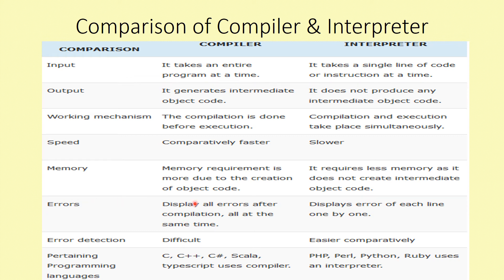Error detection: In the compiler, errors are found for the whole program. Error detection is different for the interpreter — it is more difficult because errors are detected one line at a time.